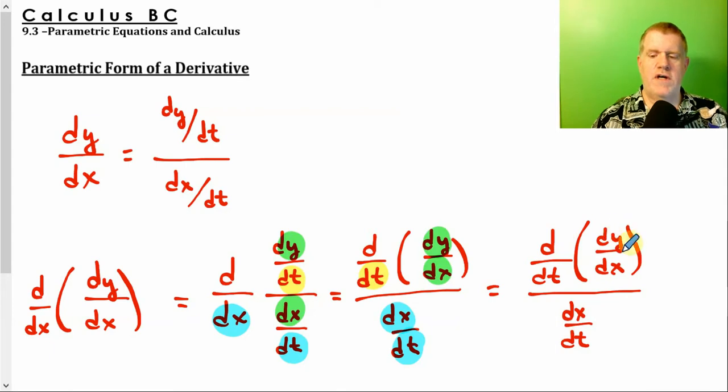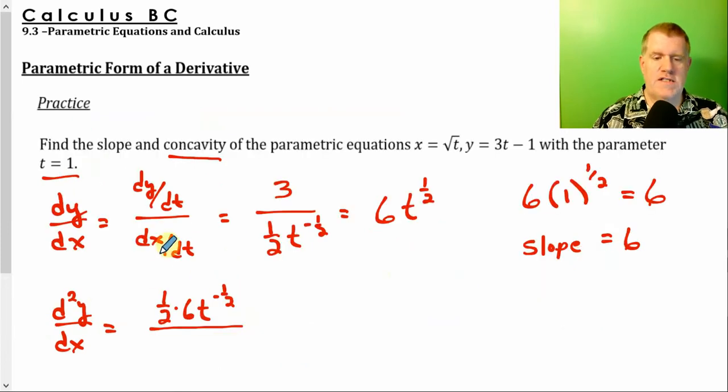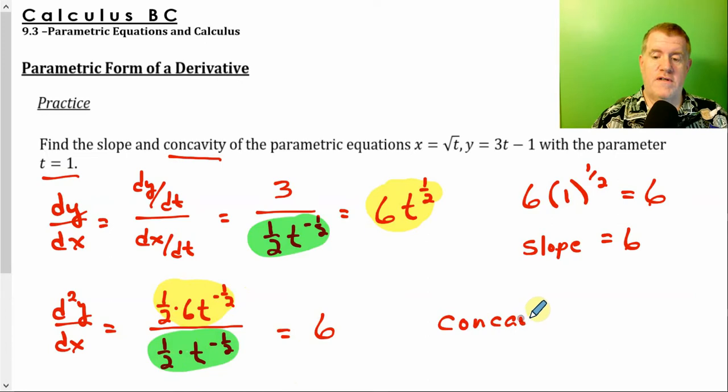Over dx dt. Remember, we're taking the derivative of the function we just took over the derivative of x with respect to t. Well, dx dt, remember, is this. It's 1 half t to the negative 1 half. So if you think about it, what you're doing is you're taking the derivative of the derivative, which is that. That's the numerator. And your denominator is dx dt. That's the second derivative for a parametric equation. Now it just so happens in this particular case, the 1 halves divide away. The t to the negative 1 halves divide away. You're left with 6. So your second derivative is just 6, which means it's concave up.